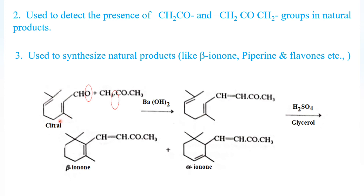The starting material for beta-ionone synthesis is citral, which has a carbonyl group, and is treated with acetone (an aliphatic ketone). Water is removed, and an alpha-beta unsaturated carbonyl compound is formed in the presence of barium hydroxide as alkali. It then reacts with sulfuric acid in the presence of glycerol, breaking a bond and uniting two carbons, giving two products: beta-ionone (the major product) and alpha-ionone.